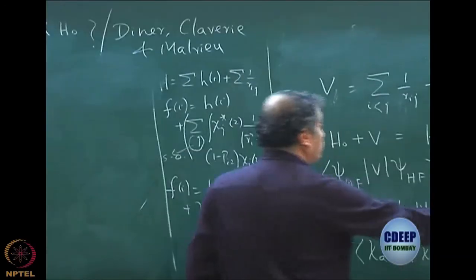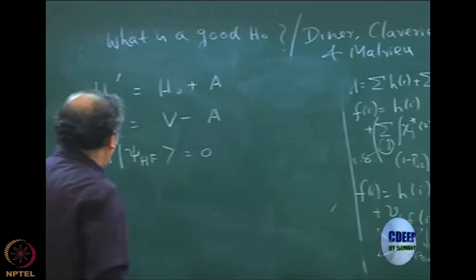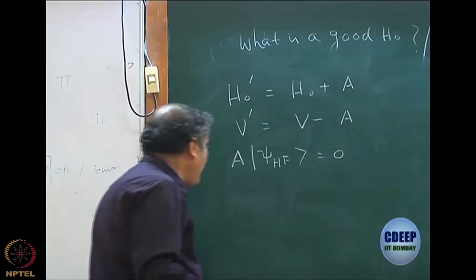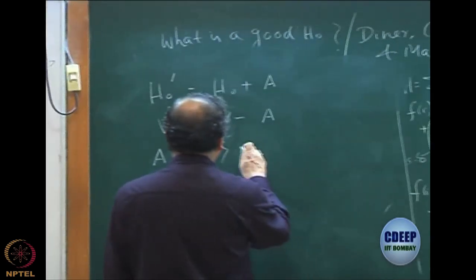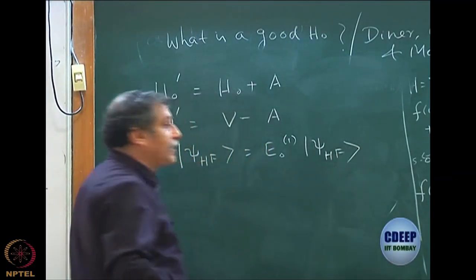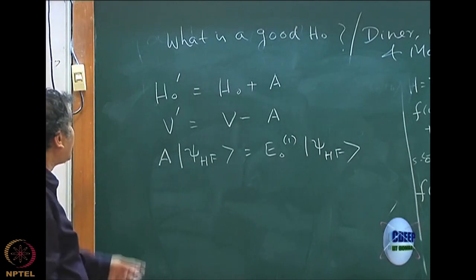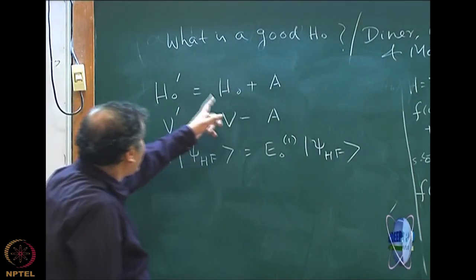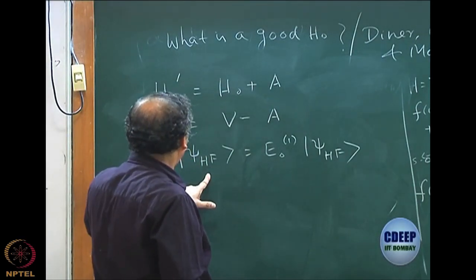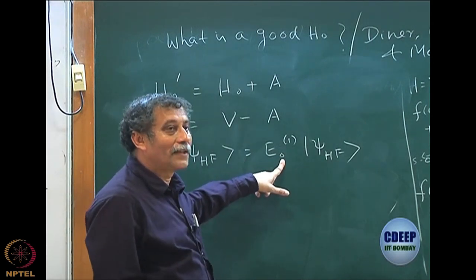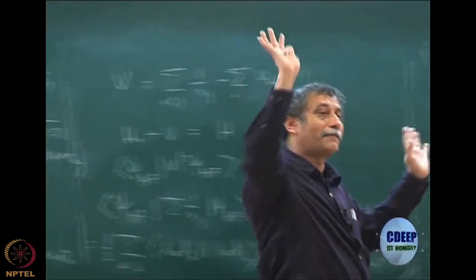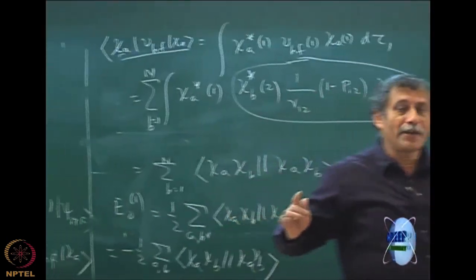A is not a null operator — it acts on other determinants and may give some nonzero value. If I do this, nothing will change, neither E00 nor E01. On the other hand, if A acting on Psi Hartree-Fock equals E01 times Psi Hartree-Fock, then something will change. I get back the same thing as H0 plus V prime, except that H0 prime is not H0 plus a number E01, but an operator whose eigenvalue with respect to Psi Hartree-Fock is E01.